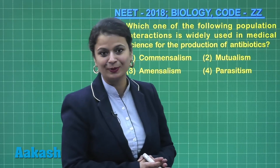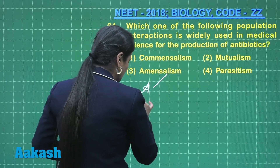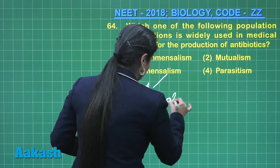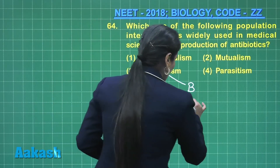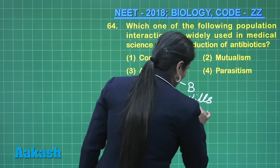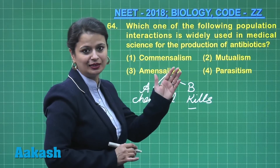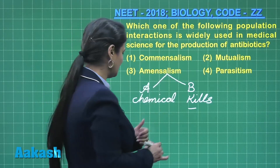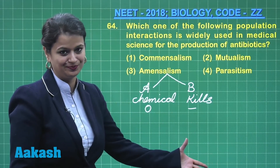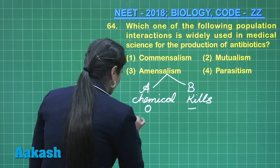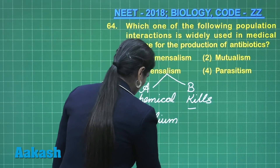In amensalism, organism A secretes chemicals which kill another organism in the nearby area. Organism B is negatively affected, while organism A is neither negatively nor positively affected. So it is a zero-negative interaction.